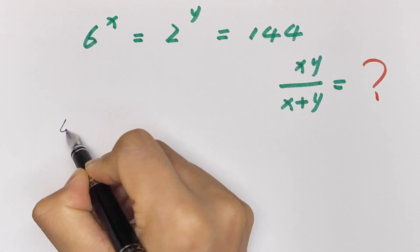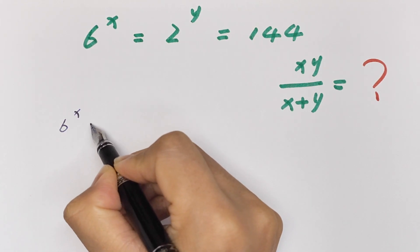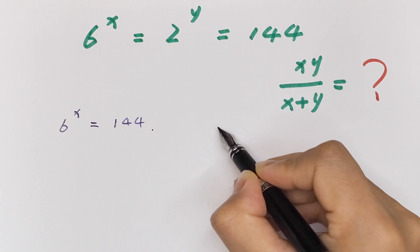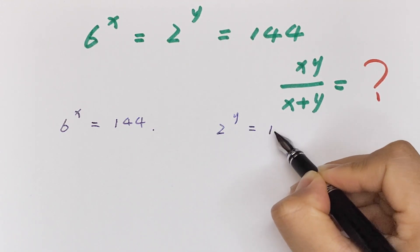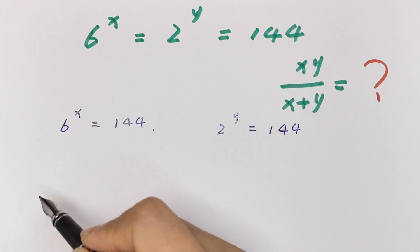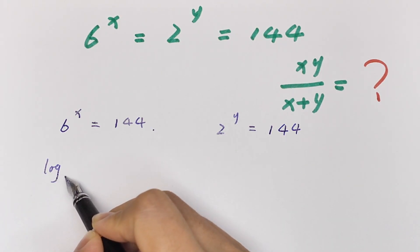So 6 to the power x is equal to 144, and 2 to the power y is equal to 144. I'll take the log of base 6.